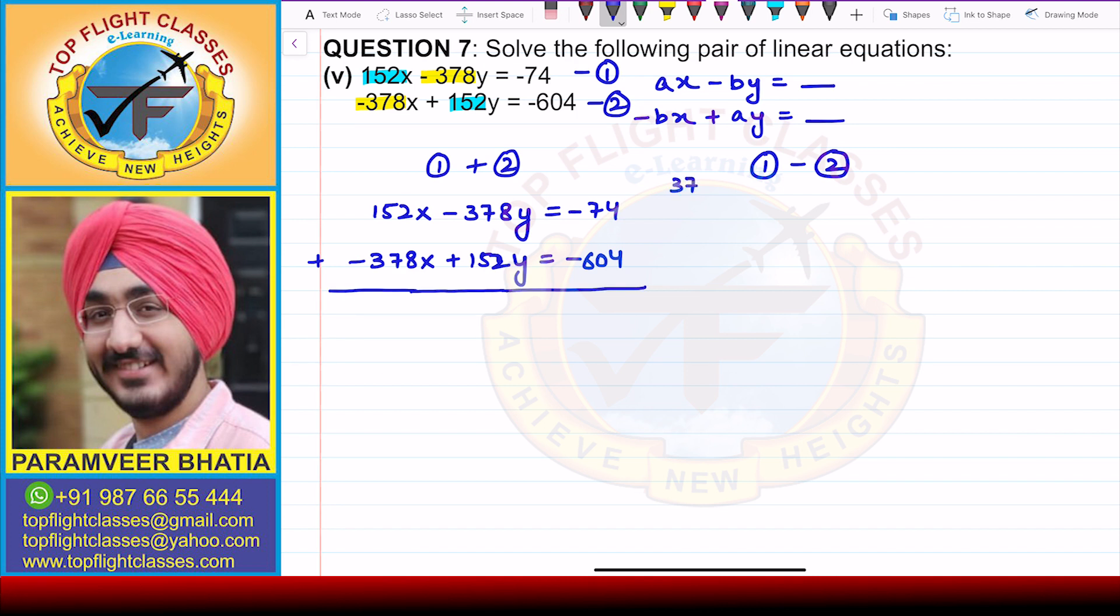Now we have to subtract the two equations. So when I will subtract, I will get 6 over here. 7 minus 5 is 2 and this is also 2. So from here, I will get -226x - 226y is equal to, when I will add them, you will get -678.